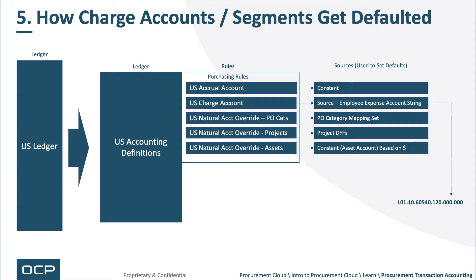Let's look at how Charge Accounts and segments get defaulted. The individual ledger defines the accounting options. Within those accounting options or definitions, you have rules. You can have a rule to set the accrual — which could come from a constant — or a rule to set the charge account, which could grab the employee expense account, set to a constant, or vary based on different variables like who you are. You can also have a natural account rule that overrides the constant or employee expense account based on the item category. The same applies to projects and assets. These rules are called in a specific sequence.